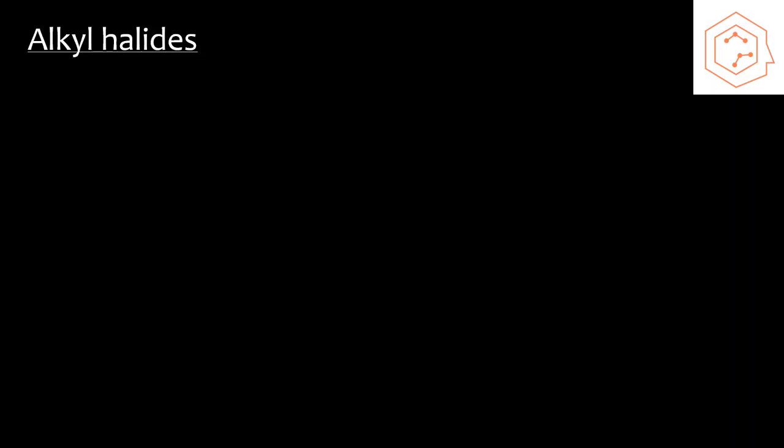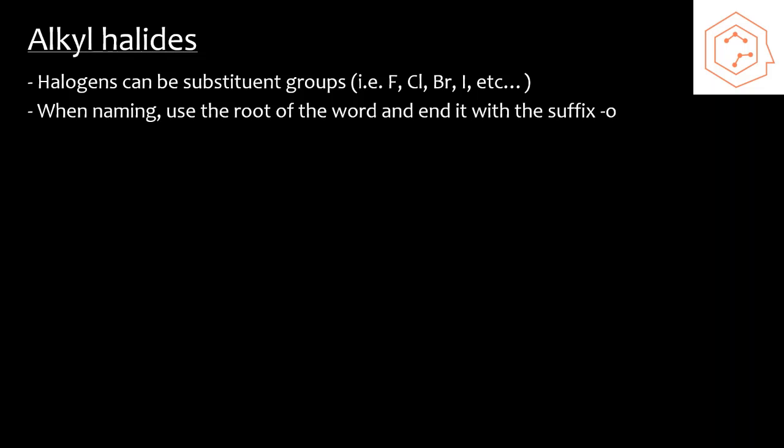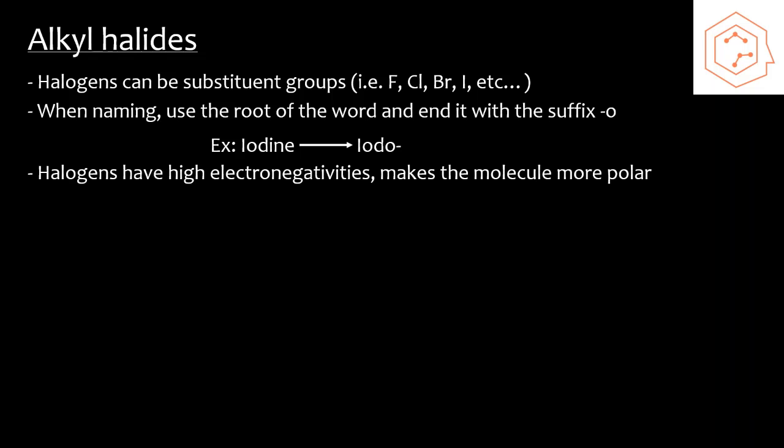We also have alkyl halides, which are just alkane structures that have halogens connected to them. Halogens can also act as substituent groups in organic compounds, and these include everything in group 17 of the periodic table. So fluorine, chlorine, bromine, iodine, all those elements. When we name alkyl halides, we are going to use the root of the word, but instead we're going to replace its ending with the suffix O. So if we took iodine, for example, in an organic compound, we would just list it as iodo. Halogens also have high electronegativities, which makes the molecule more polar because the difference is going to be greater. As a result, you can expect that these molecules will have higher boiling points, and they also will be more reactive.